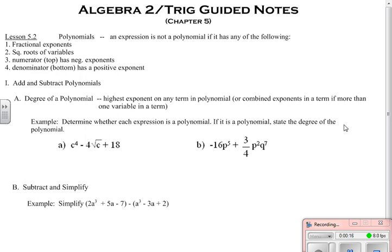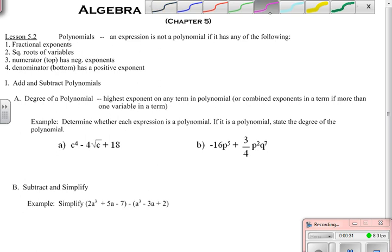So first of all, we are talking about polynomials. An expression that is not a polynomial, so we need to know what it isn't, would have any of these four things. It would have fractional exponents or square roots of variables. Remember, these two things are really the same because x to the one-half power, if you remember your exponent rules, is really the square root of x because we have that exponent rule that says the nth root of x to the m power is the same as x to the mn fractional exponent.